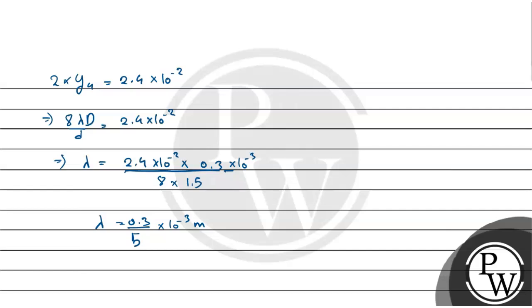Now, hum jaante hai ki, frequency, velocity and wavelength ki beech mein relation hai. That is, frequency is equal to velocity of light, that is c by lambda. This is equal to, velocity of light kya hota hai? That is, 3 into 10 to the power 8 by lambda, that is 0.3 into 10 to the power minus 3, upar mein 5 chala jayega.